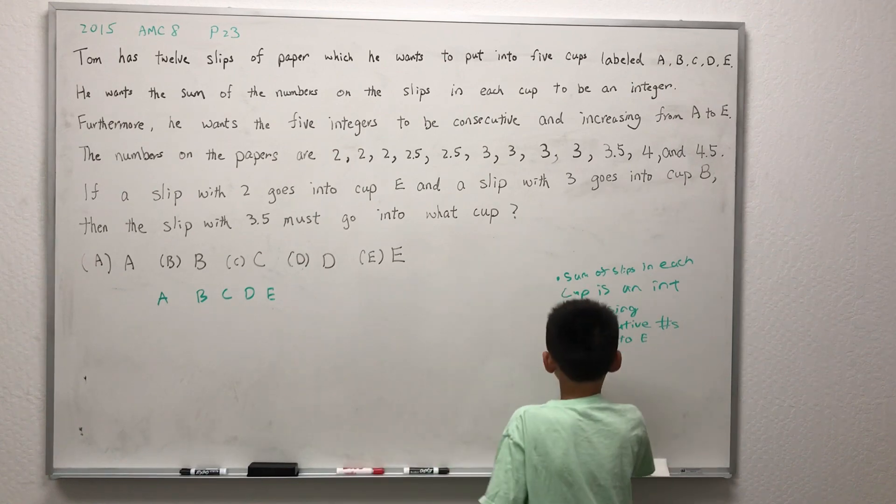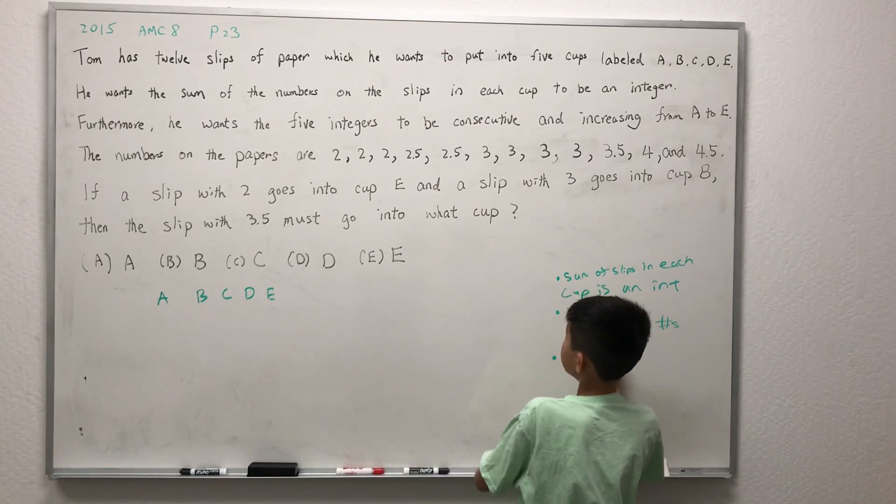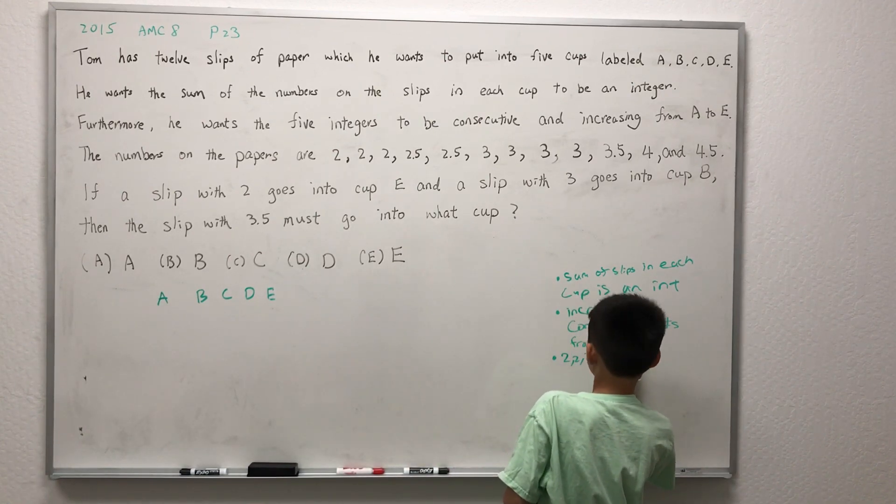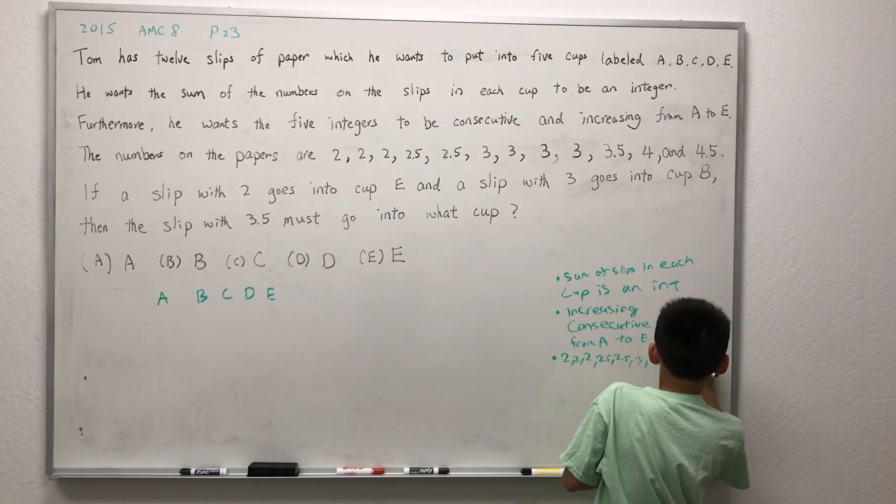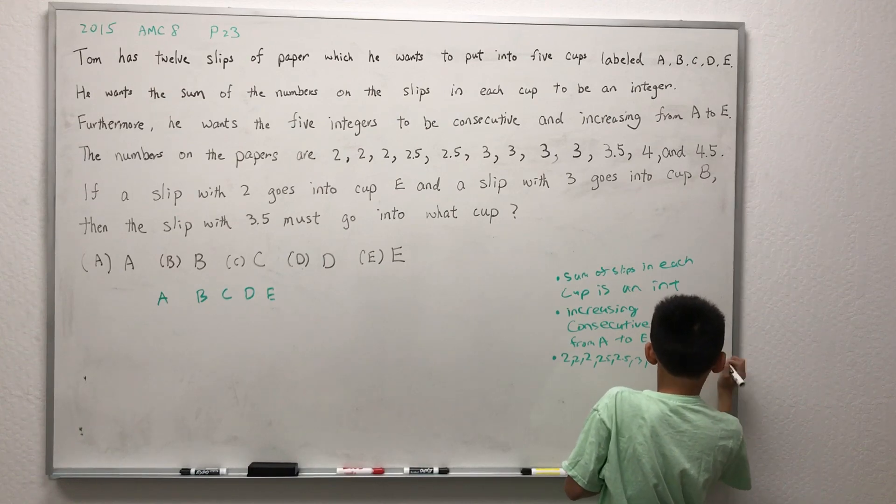Last but not least, the numbers on the papers are 2, 2, 2, 2, 2.5, 2.5, 3, 3, 3, 3, 3.5, 4, and 4.5.